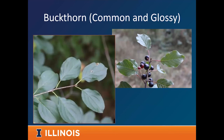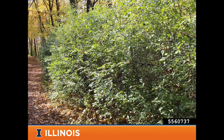The second major invasive is buckthorns — common and glossy buckthorn — which are a big issue in the northern third to maybe northern half of the state, as bad up there as honeysuckle is across the rest of the state. Glossy buckthorn prefers wetter environments, whereas common buckthorn can grow from wet to really dry environments. Common buckthorn has opposite to semi-opposite leaves that almost look like dogwood leaves with arching veins, a little thorn at the end of branches, and purple berries.